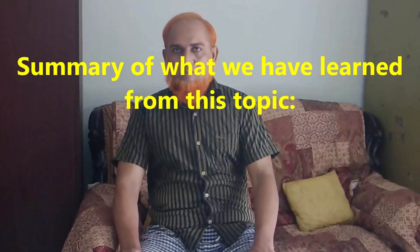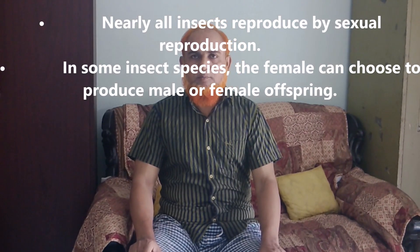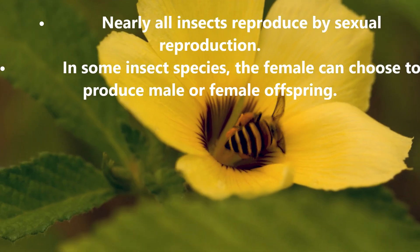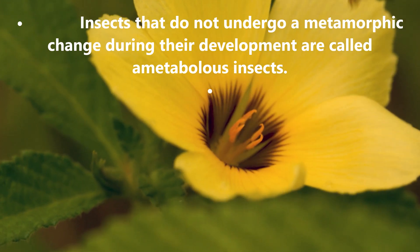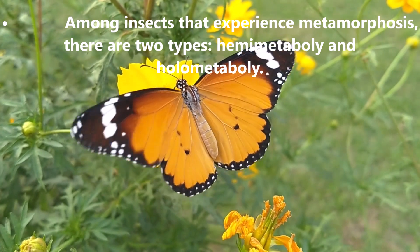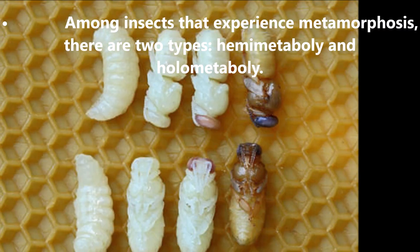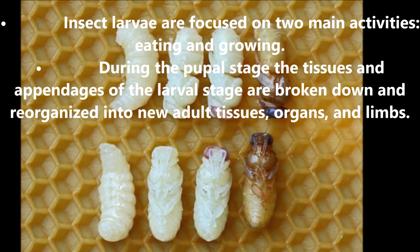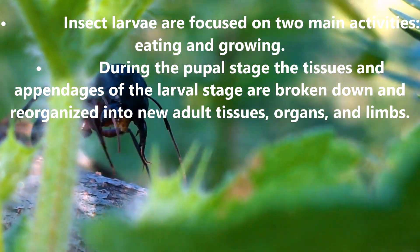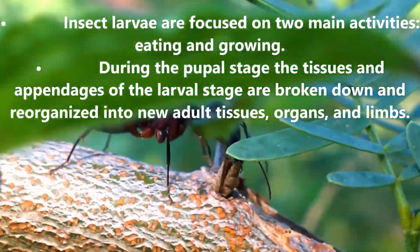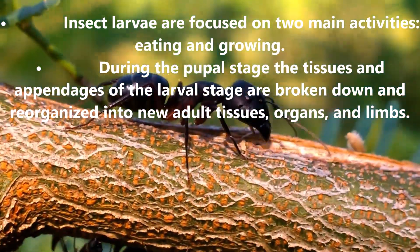Summary: Nearly all insects reproduce by sexual reproduction. In some insect species, the female can choose to produce male or female offspring. Insects that do not undergo metamorphosis during their development are called ametabolous insects. Among insects that experience metamorphosis, there are two types: hemimetabolous and holometabolous. Insect larvae are focused on two main activities: eating and growing. During the pupal stage, the tissues and appendages of the larval stage are broken down and reorganized into new adult tissues, organs, and limbs.